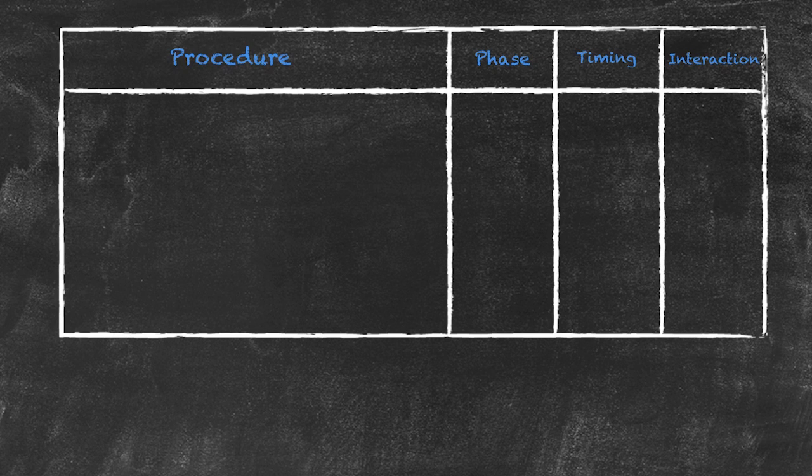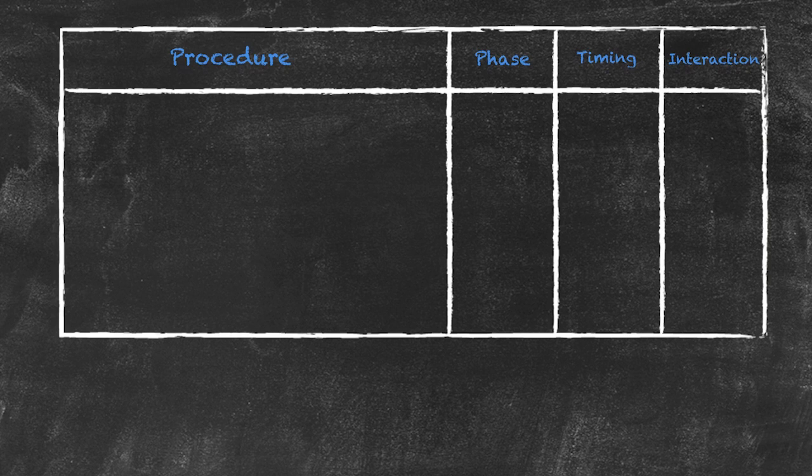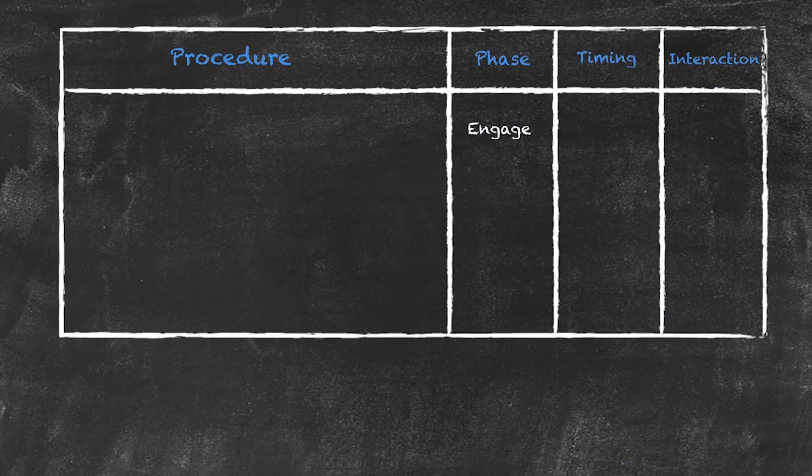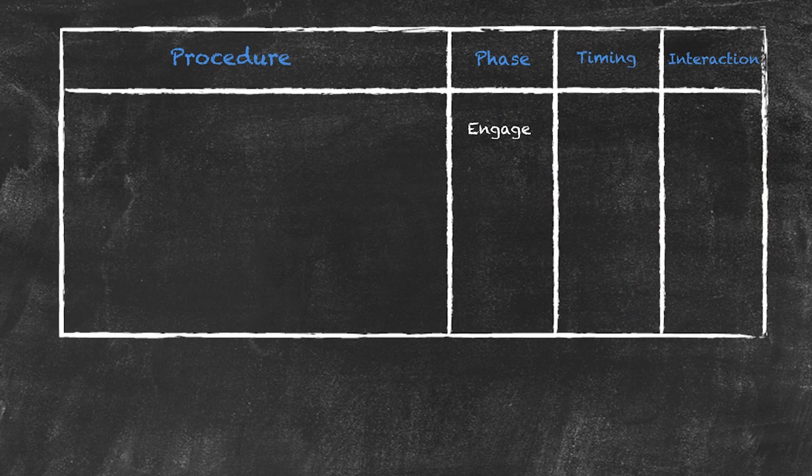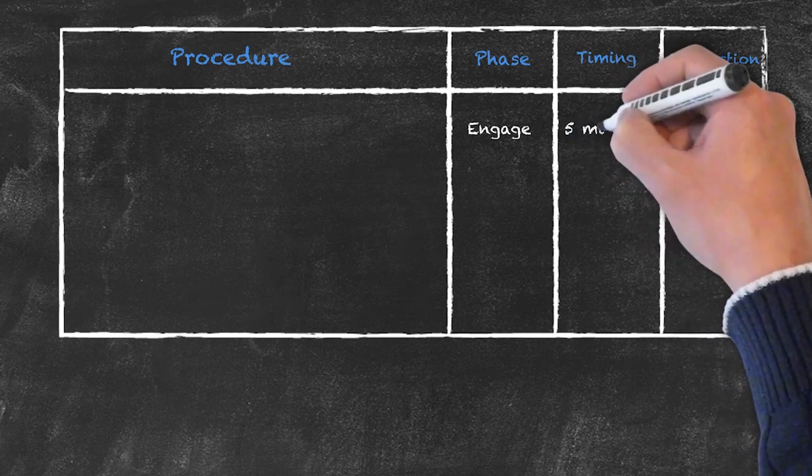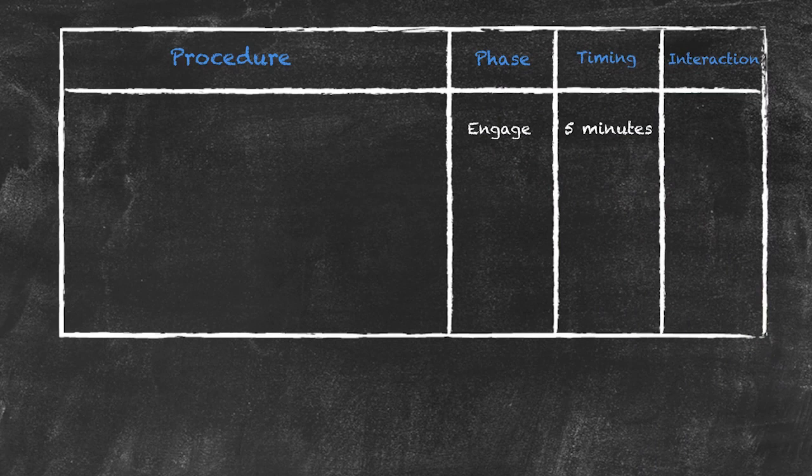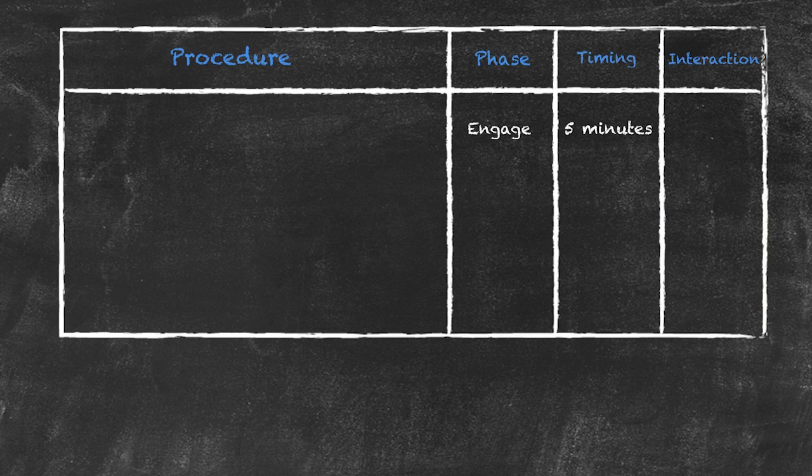So our lesson is going to be based on a 45-minute lesson, and the first phase is going to be the engage phase, and it's going to be a straight arrow ESA lesson. I'm going to take approximately five minutes on my engage phase, and in the interaction box what I'm going to do is to put down what I think is going to be the major overall interaction during that particular part of the lesson.